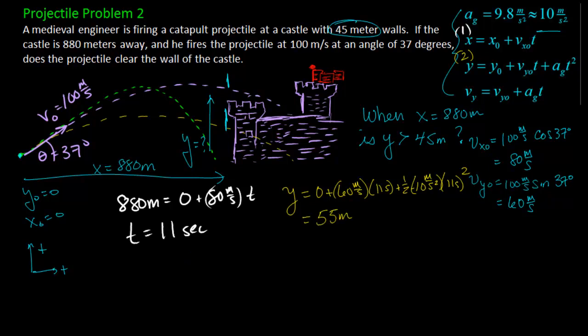Now my last step is to check and see if this is above the wall or not. So I know the wall is 45 meters high. 55 meters is greater than 45 meters. So it clears the wall.